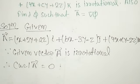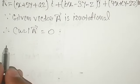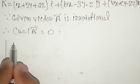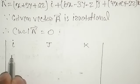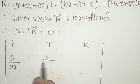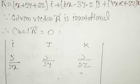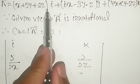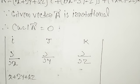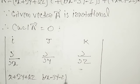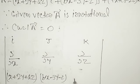The curl of vector A means we find it using the determinant with i, j, k in the first row; ∂/∂x, ∂/∂y, ∂/∂z in the second row; and the components in the third row — the i-coefficient is (x + 2y + az), the j-coefficient is (bx − 3y − z), and the k-coefficient is (4x + cy − 2z).